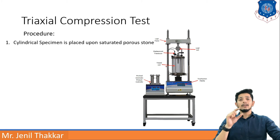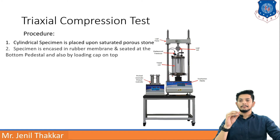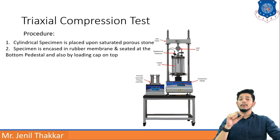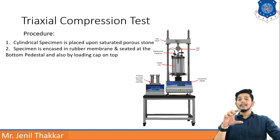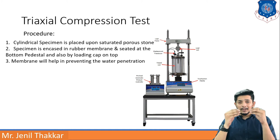Procedure: the first step is to prepare a cylindrical specimen which is placed on a saturated porous stone. The cylindrical specimen is then encased in a rubber membrane. The specimen is seated at the bottom pedestal and covered by a loading cap on the top, so it is enclosed from both sides — loading cap on top and bottom pedestal below.